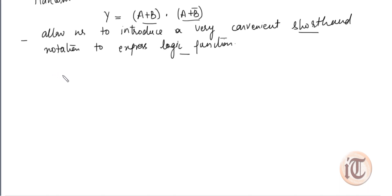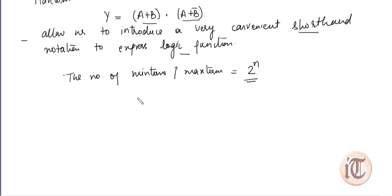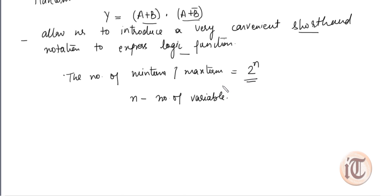The total number of min terms and max terms is equal to 2 to the power n, where n is the number of variables or literals. For example, in y = (a + b)(a + b̄), there are 2 variables, so the total number of max terms is 2² = 4. This is how we represent the standard SOP and standard POS forms using min term and max term notation.